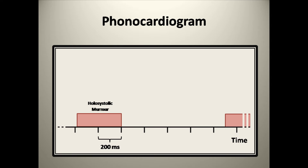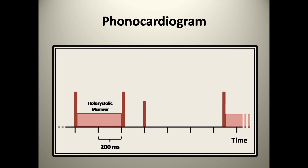I predominantly hear the murmur first, and then after that I could probably identify two sounds relatively quickly — one occurring right at the end of the murmur, and another one slightly softer occurring shortly afterwards. If you're paying really close attention, there's actually one final heart sound that comes right at the beginning of the murmur, which your brain kind of loses because it's focusing on the murmur that comes right afterwards.